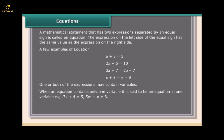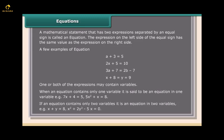For example, 7x + 4 = 5, and 5x² + x = 8 are equations in one variable. If an equation contains only two variables, it is an equation in two variables. For example, x + y = 8, and x² + 2y² - 5x = 0.